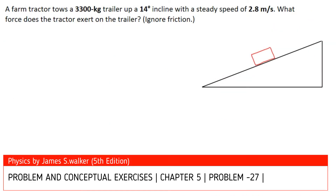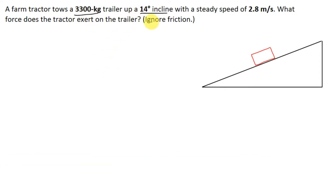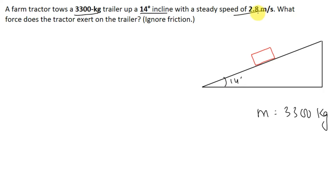In this question we are given that a farm tractor tows a 3300 kg trailer up a 14 degree incline. The mass of the trailer is 3300 kg and it is moving with a steady speed of 2.8 meters per second. We need to find the force the tractor exerts on the trailer.